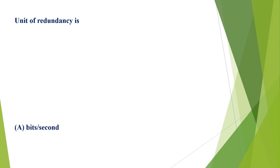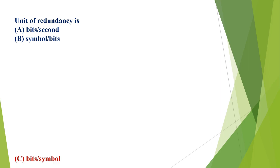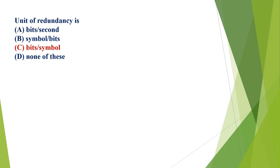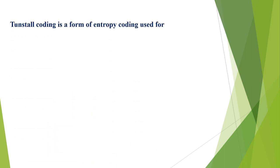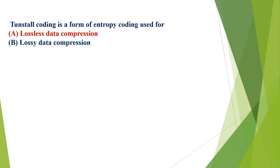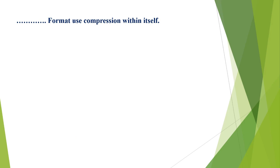The unit of redundancy is: A) bits per second, B) symbols per second, C) bits per symbol, D) none of these. The correct option is C, bits per symbol. Turnstall coding is a form of entropy coding used for: A) lossless data compression, B) lossy data compression, C) both, D) none of these. The correct option is A, lossless data compression. Which format uses compression within itself? A) GIF, B) JPG, C) PNG, D) all of these. The correct option is D, all of these — GIF, JPG, and PNG all use compression within themselves.